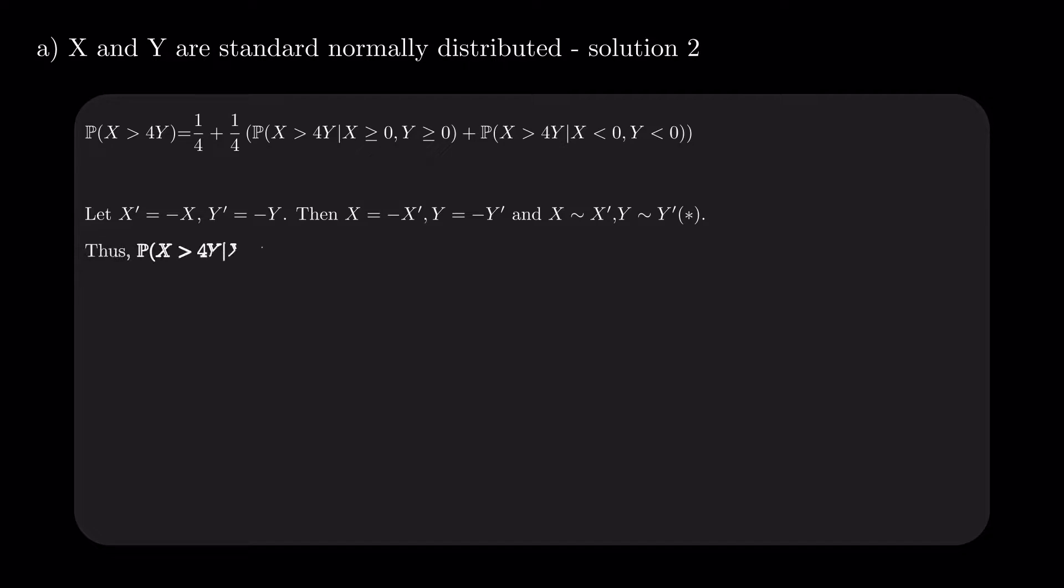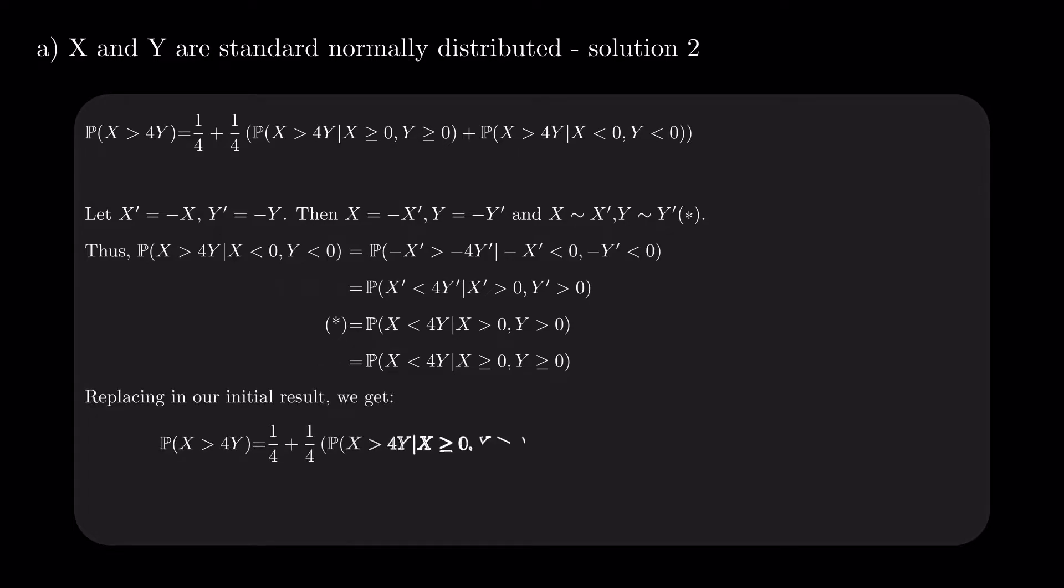We rewrite the second probability, replacing everywhere X with -X' and Y with -Y', and use the property deduced before to get that the initial value is equal to the probability that X is less than 4Y, conditioned on X and Y greater than 0. Given that they are continuous random variables, we can change the conditioning to X and Y at least 0. We replace this equivalency in the initial result and use the fact that the two probabilities on the right-hand side are complementary to arrive at the same result as the first solution, 1/2.